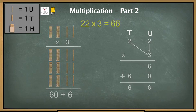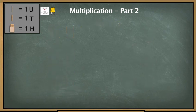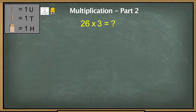Now let us look at a slightly more difficult problem. The problem to be solved is 26 times 3. 26 is 2 tenths and 6 units, and we need to multiply 2 tenths and 6 units by 3.